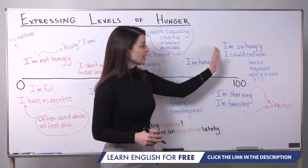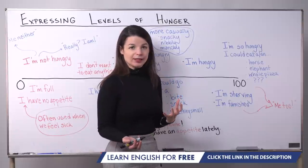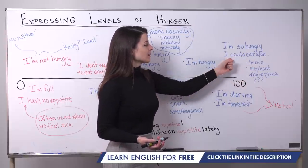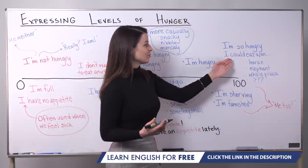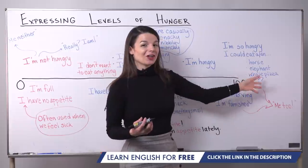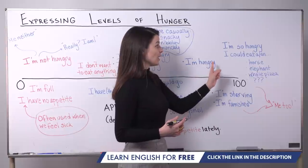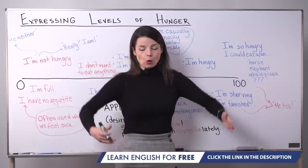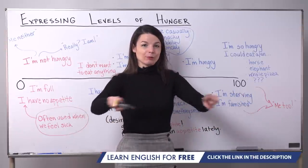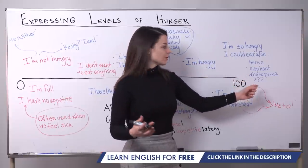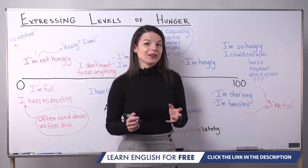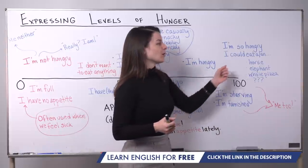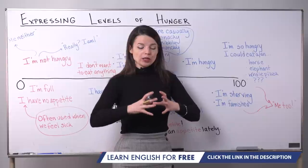There's one more expression: 'I'm so hungry I could eat a...' or 'I could eat an...' We use 'could' here to mean it's possible. This person wants to express they could eat something very large. Some common examples: 'I'm so hungry I could eat a horse,' 'I'm so hungry I could eat an elephant,' or 'I'm so hungry I could eat a whole pizza' — meaning 100% of a pizza, not just one piece. You can choose your own thing too, but we usually use something very big or kind of crazy in this expression.